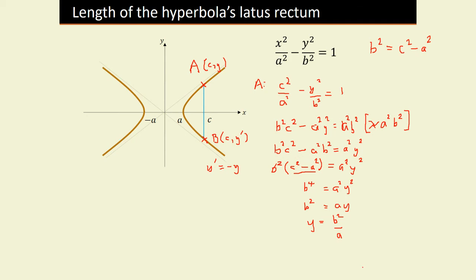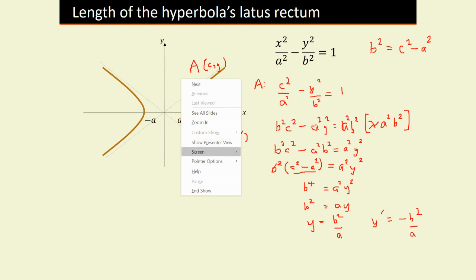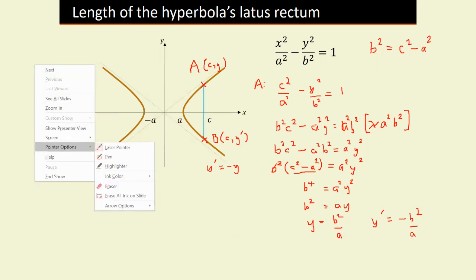The coordinate y' is the negative of B²/A. The length of the latus rectum is the distance from the top endpoint all the way down to the bottom. Because of symmetry, we can just double the distance from the focus to point A. That distance is just the y-coordinate, B²/A. Therefore, the latus rectum equals 2B²/A.